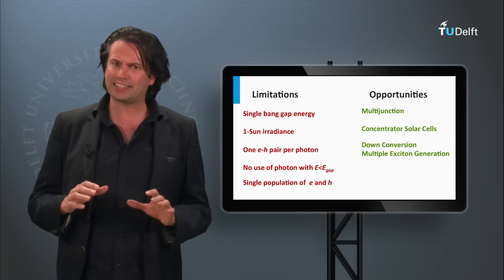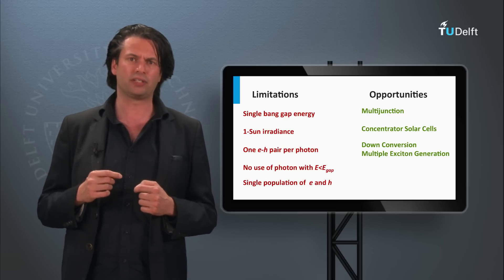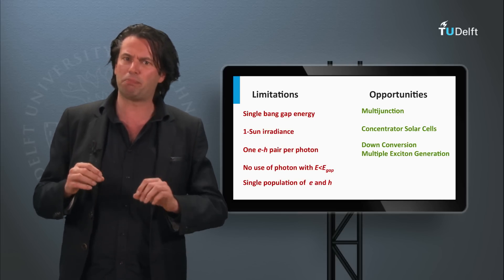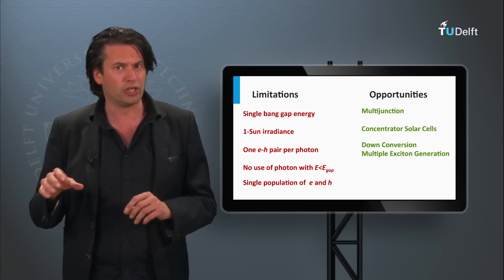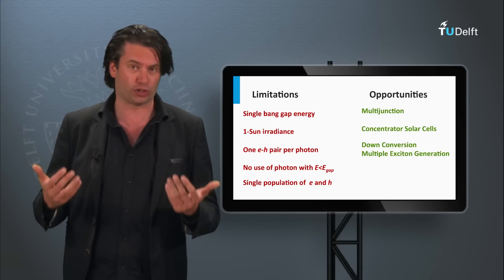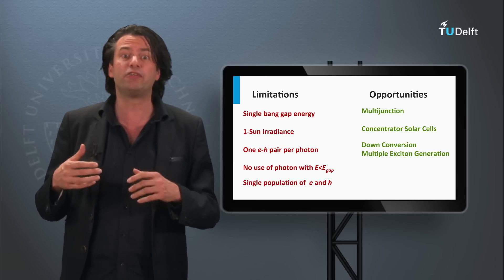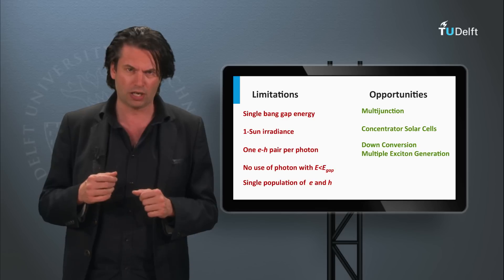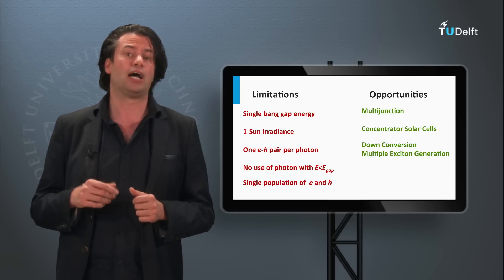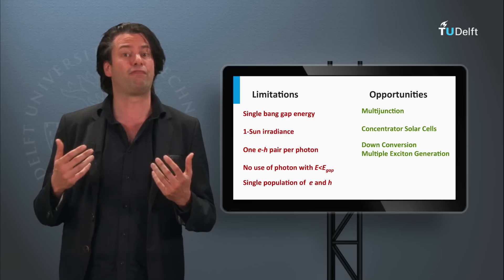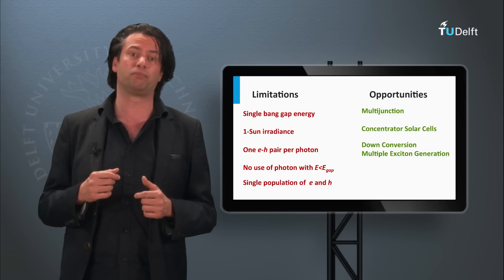The fact that every photon can only generate at maximum one collected electron can in theory be tackled by two approaches. The first one is down-conversion, which is a spectral conversion approach. The high-energetic photons are split into two or even more low-energetic photons before being absorbed in the PV active part. As a result, high-energetic photons can result in more than one electron being collected.